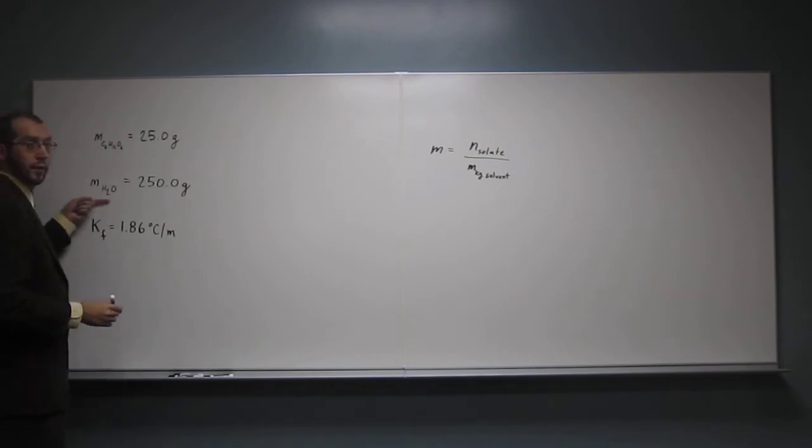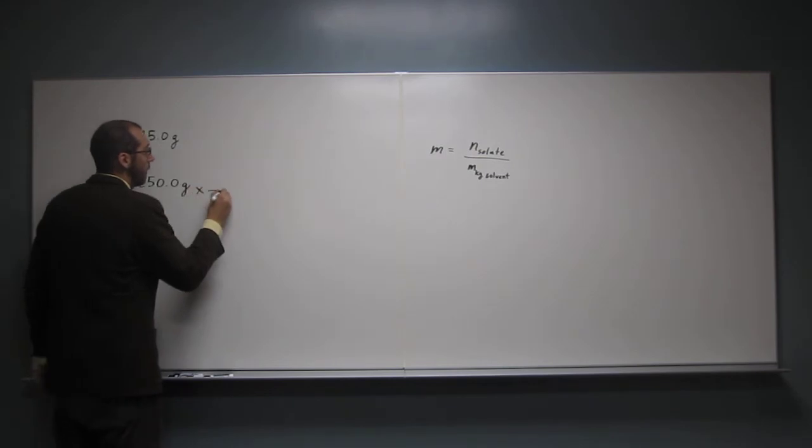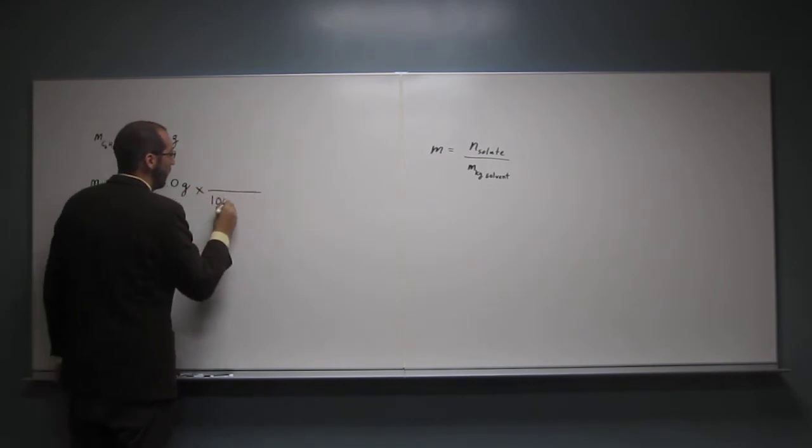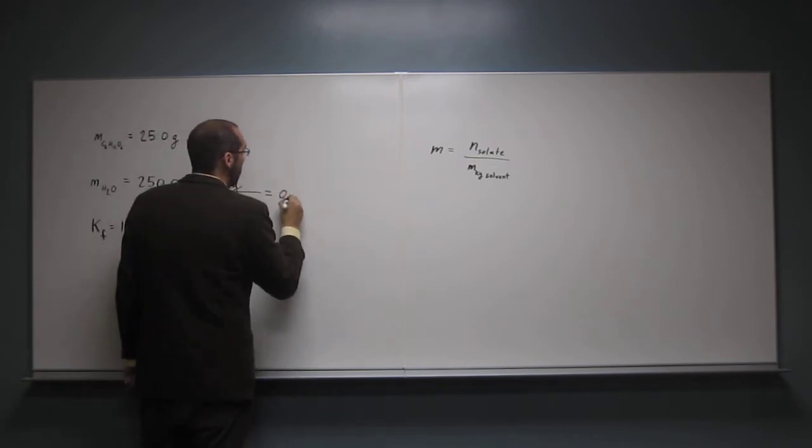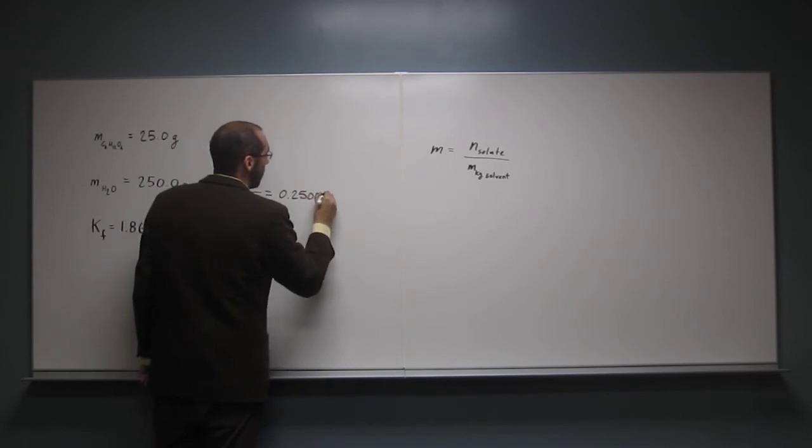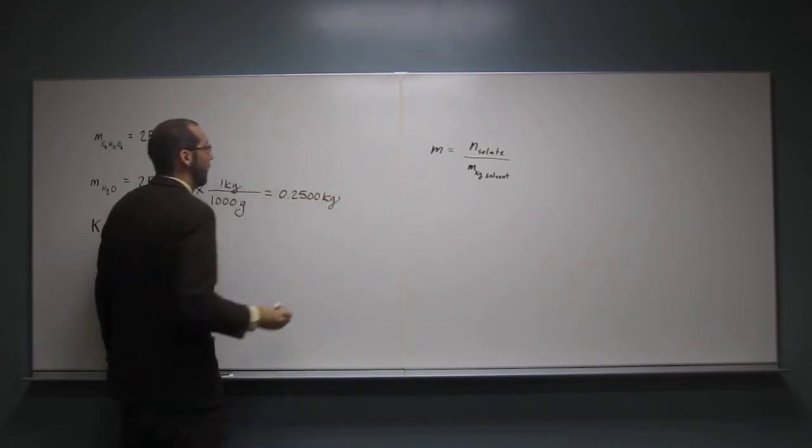Water is the solvent, in this case. So, number of kilograms, 1,000 grams per kilogram, it's going to be 0.2500 kilograms.